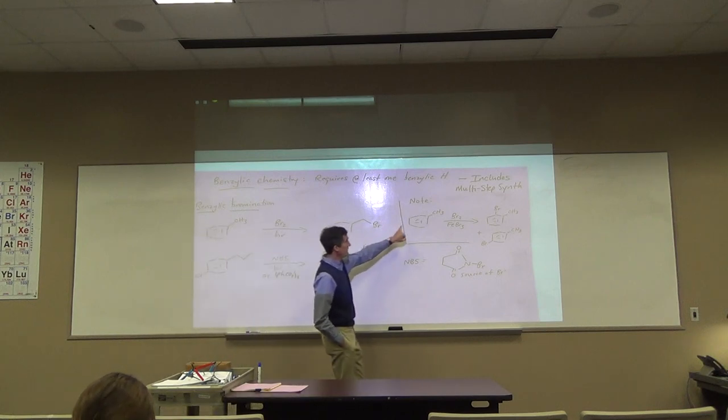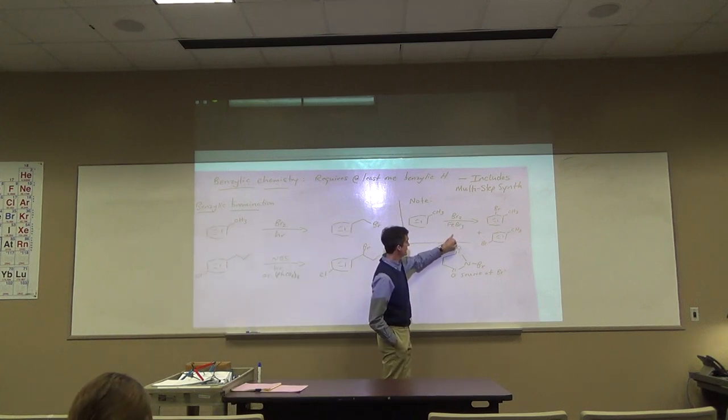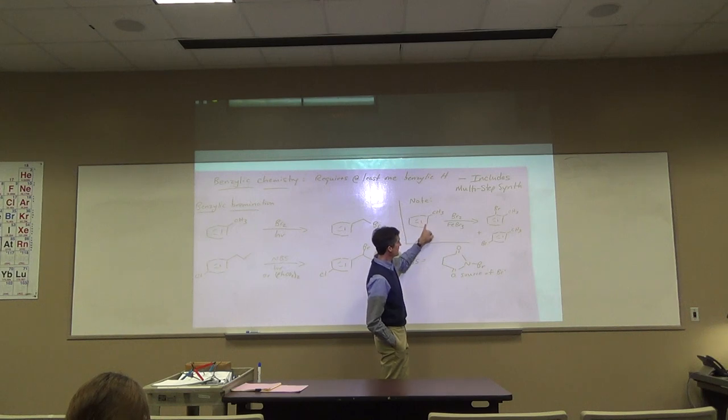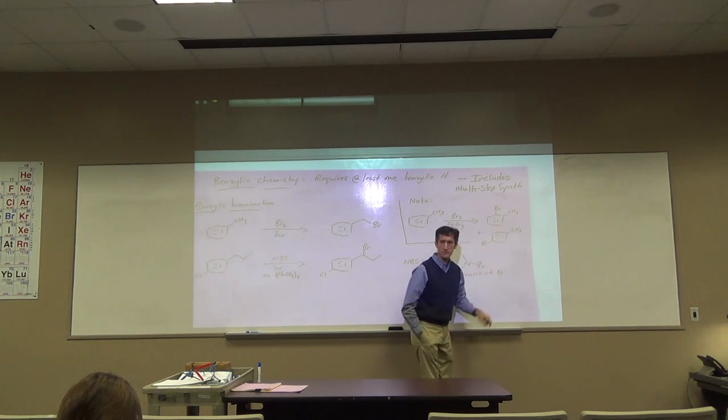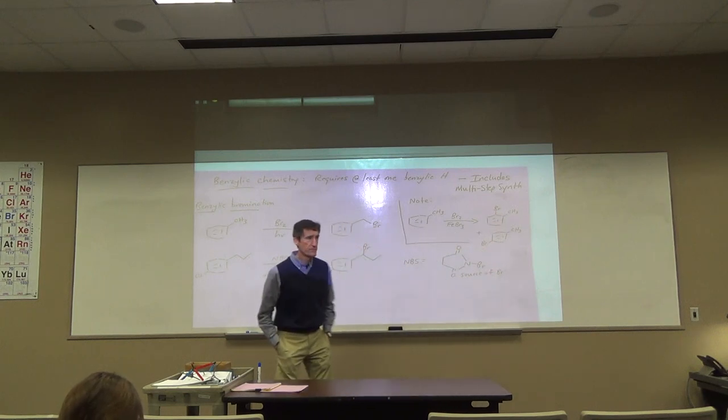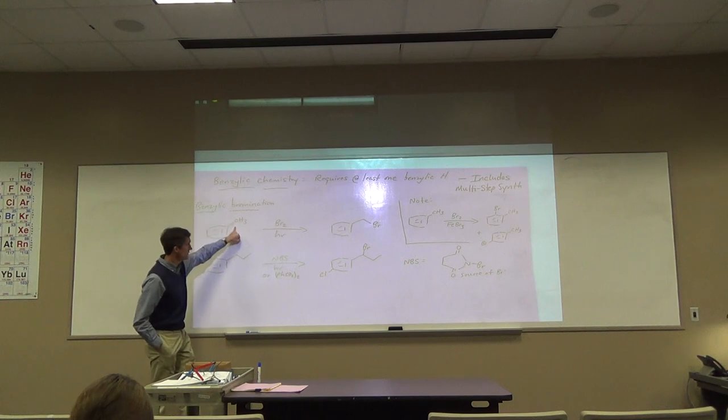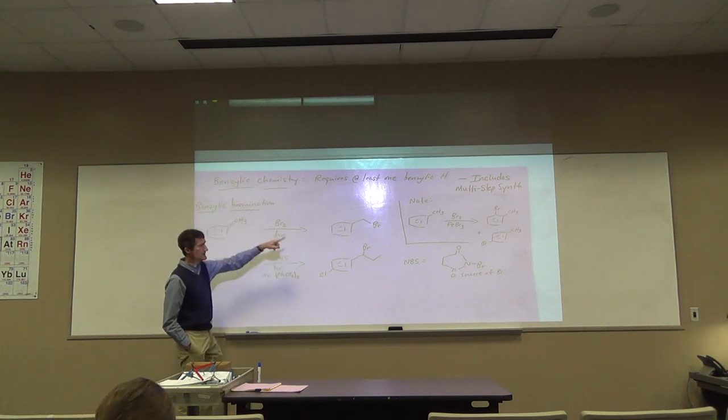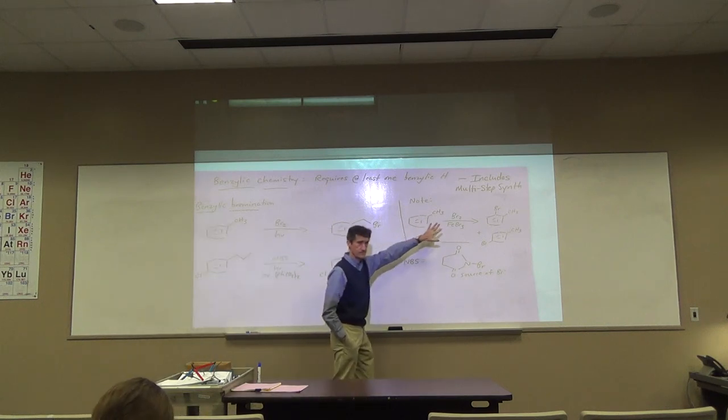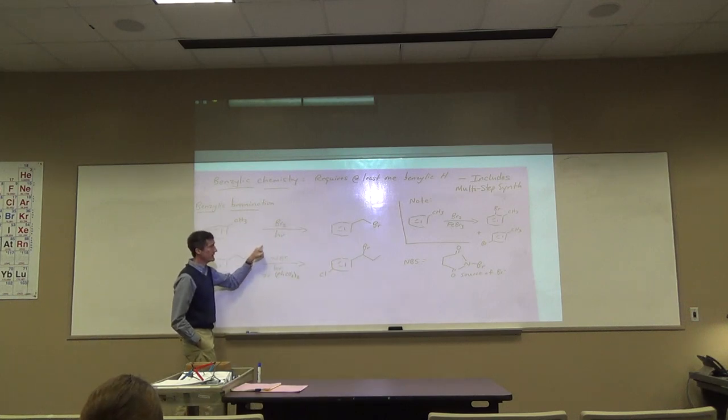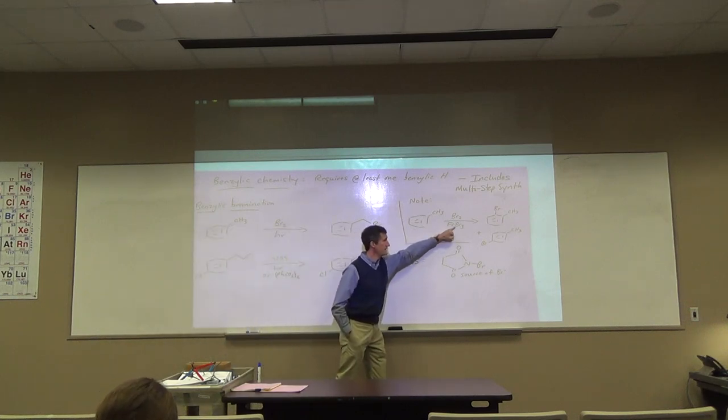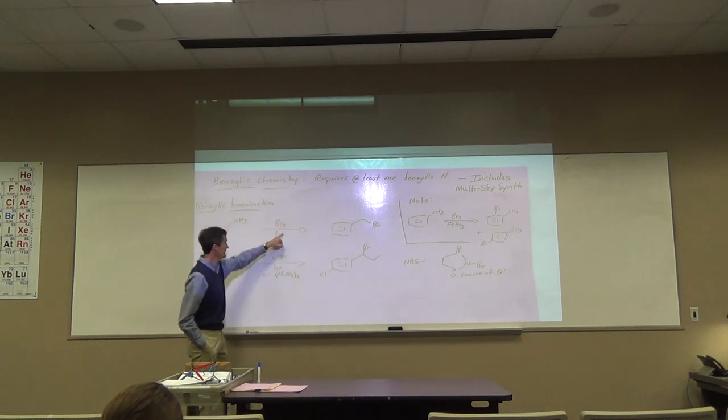Note, toluene with bromine and Lewis acid is going to give ring bromination. And since the methyl is an ortho-para director, we would get bromine ortho and para to the methyl group. But here we're doing benzylic bromination. Radical reaction. That's EAS mechanism. This is going to have a Lewis acid. This is going to be light or peroxides.